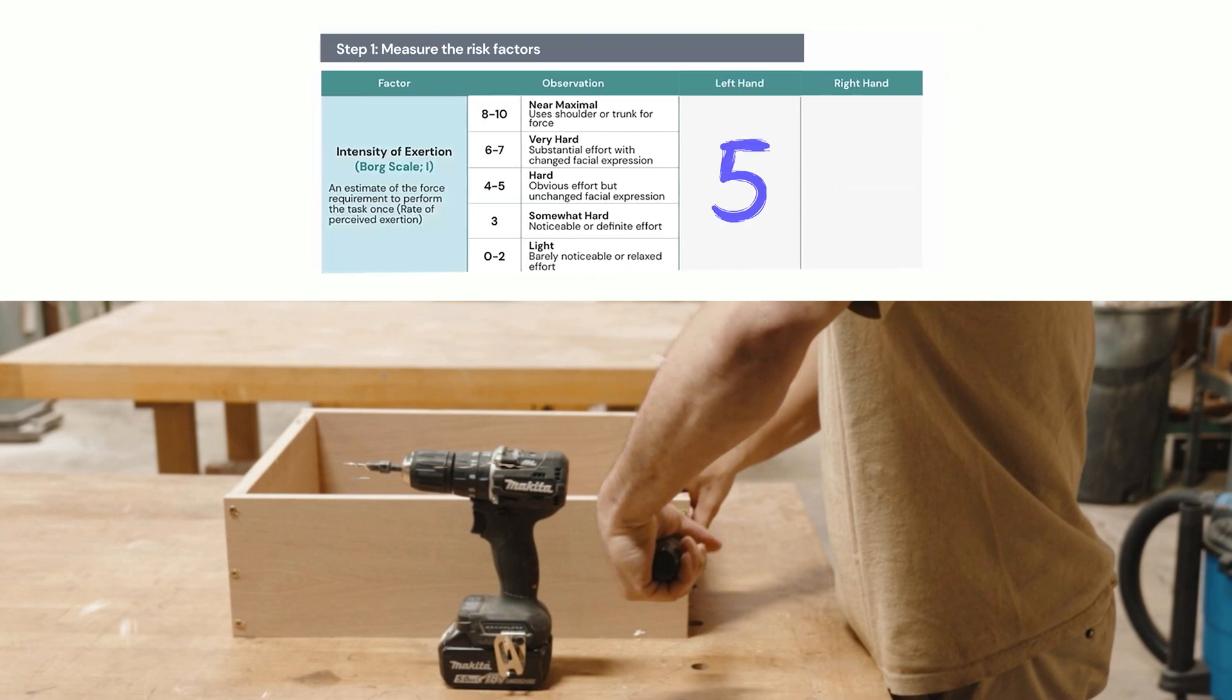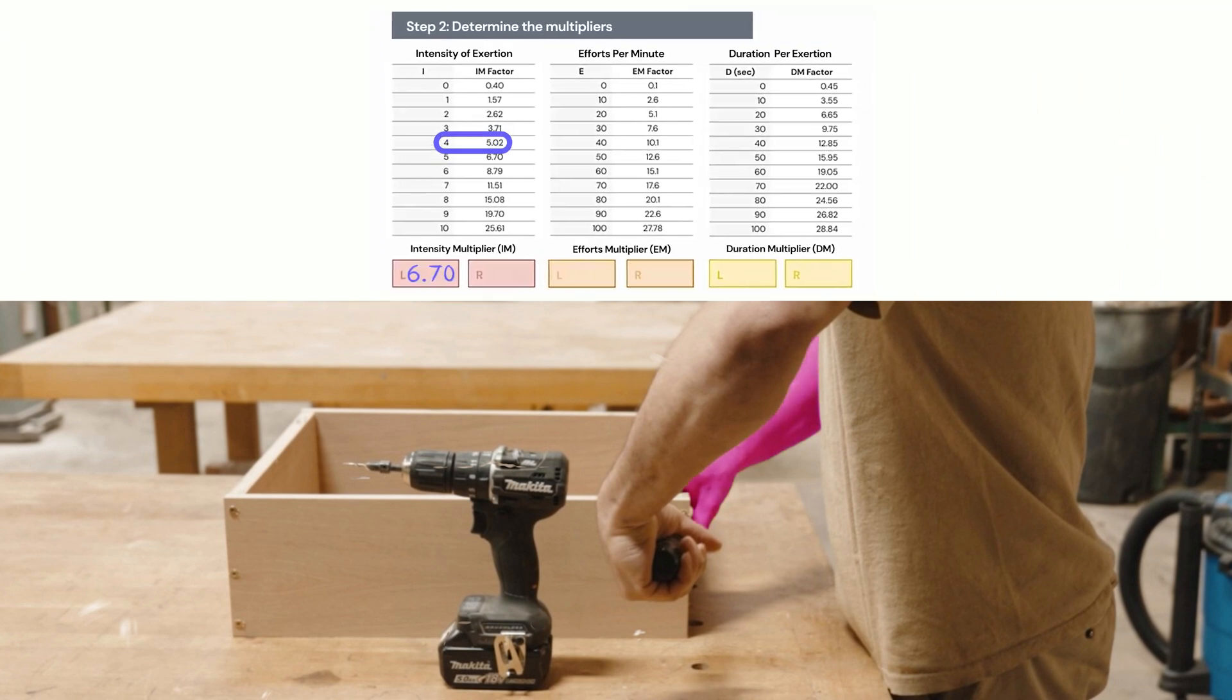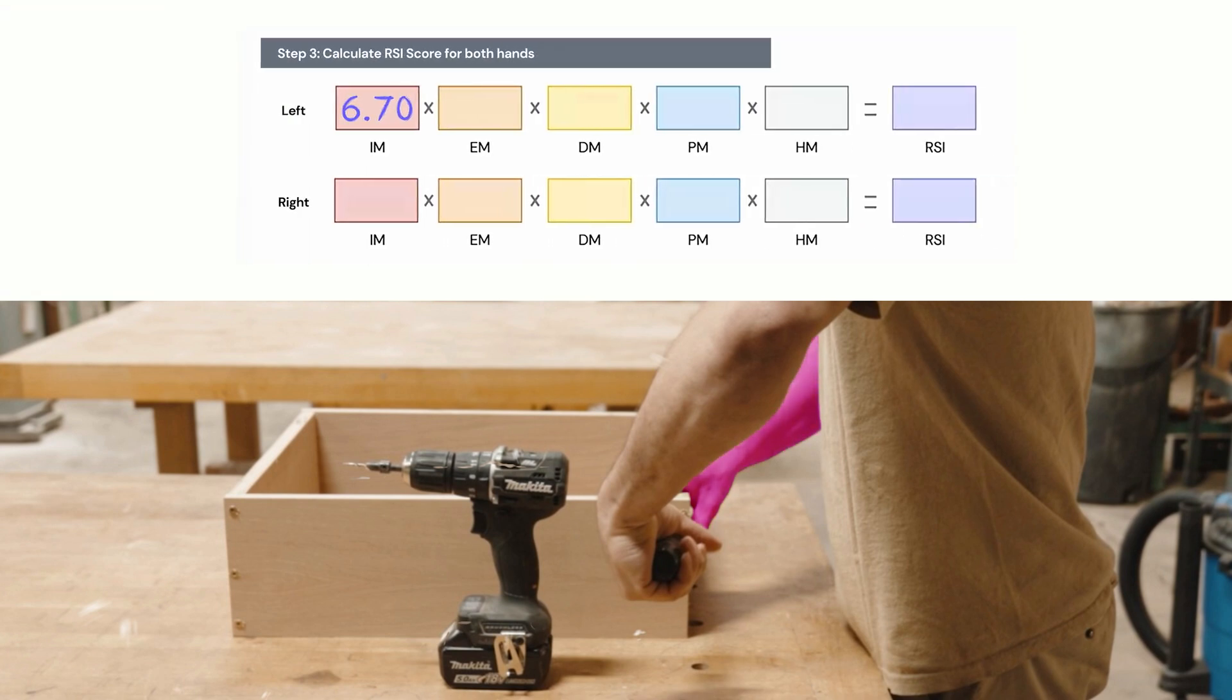Now we loop back around and do the same thing for the right hand. We're going to measure the intensity of exertion. We're going to give him a 4 on this. Stay in the hard zone, but this is a little bit different exertion if you'll notice what the right hand is doing. Find the 4 on the conversion table. Find the conversion factor. Plug it into the right hand box, the red box. Take that number and plug it into the lower left hand corner for the right hand as well. Now you've got the intensity covered.